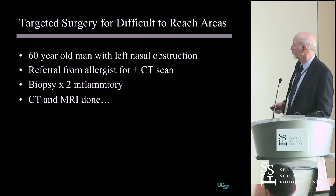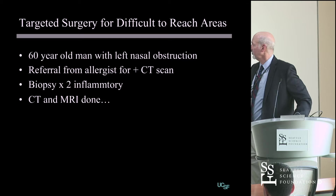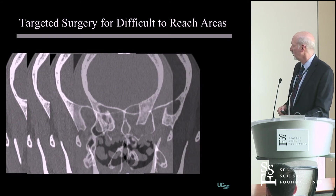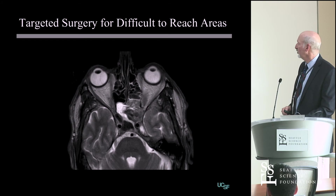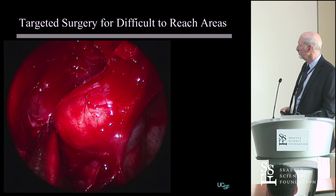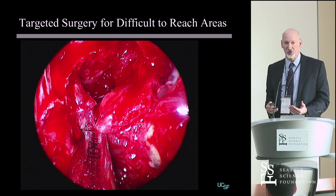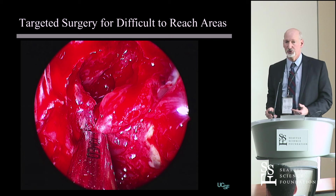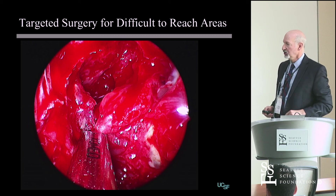Targeted surgery can be used for difficult-to-reach areas. Here's a 60-year-old man referred for a positive CT scan, with biopsies done outside. The coronal CT shows a unilateral process filling the sphenoid with dehiscence into the middle fossa. An endoscopic approach was used. I use the microdebrider judiciously — it's helpful in reducing tumor bulk, but you always have to have the opening of the microdebrider in your sights. That's the critical issue: you can't stick it into something blindly.